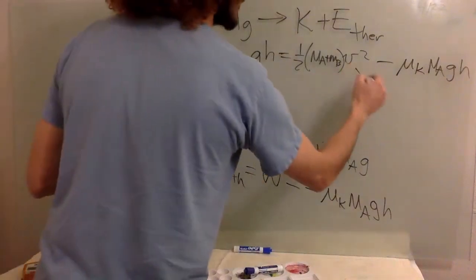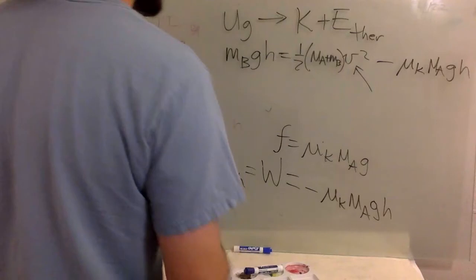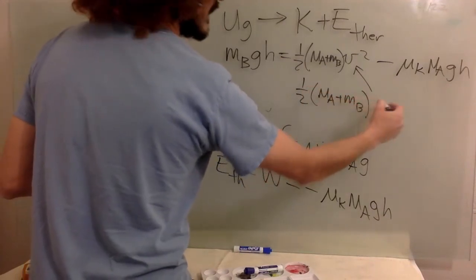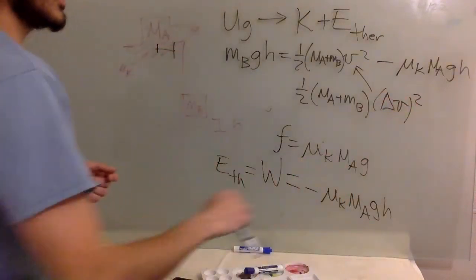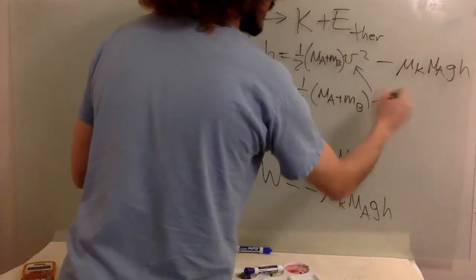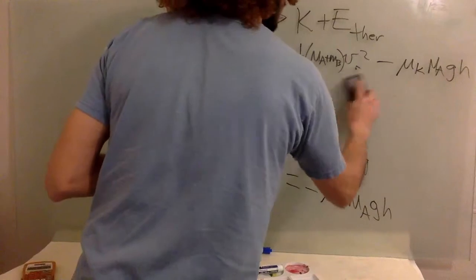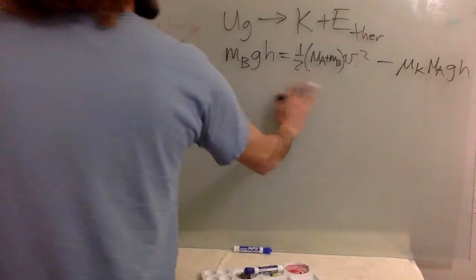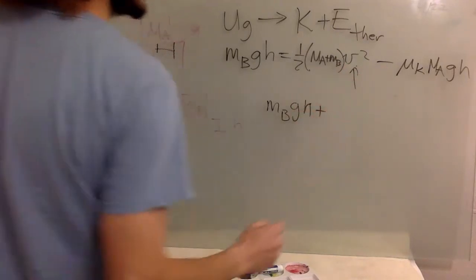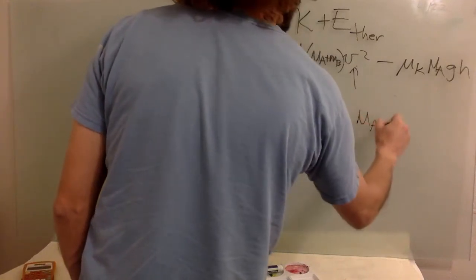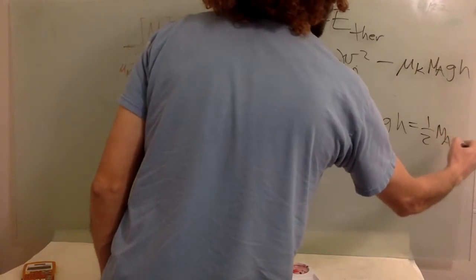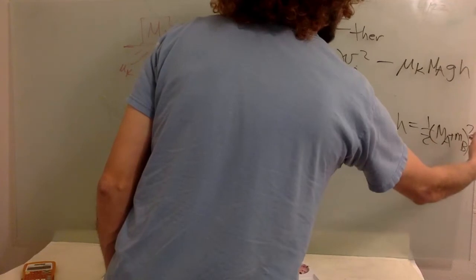And so we are asked to find this velocity, this final velocity at the end. So technically, you also have a change in velocity squared, but it starts from rest. So the initial velocity is zero, and so the final velocity is just the velocity that we have here. All right, so let's solve for this system, see what we get. All right, we want this guy.